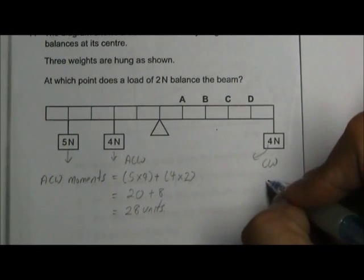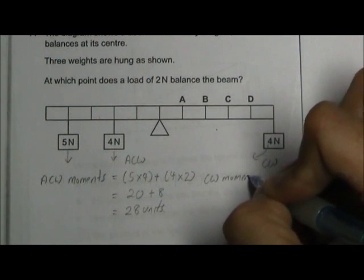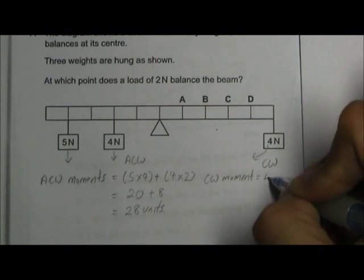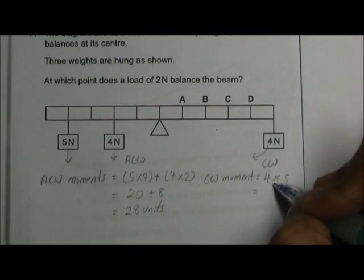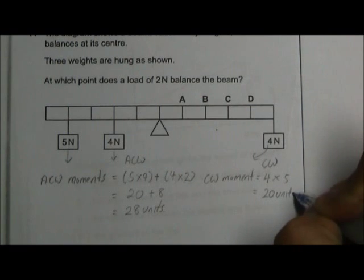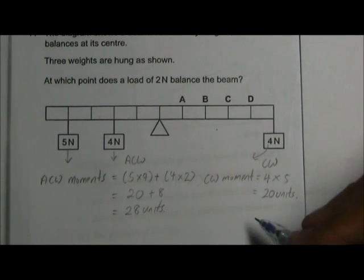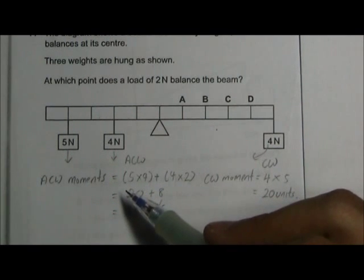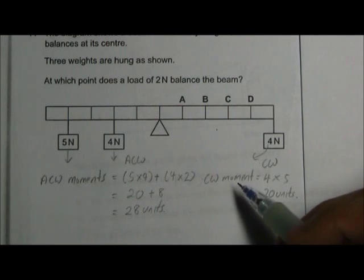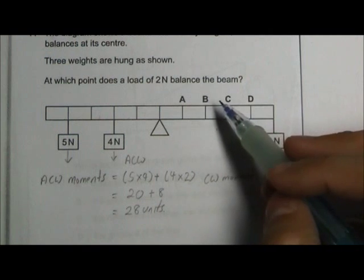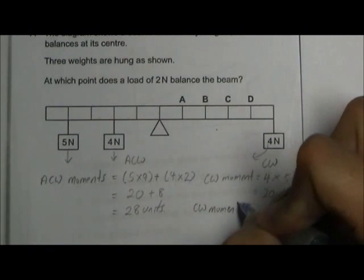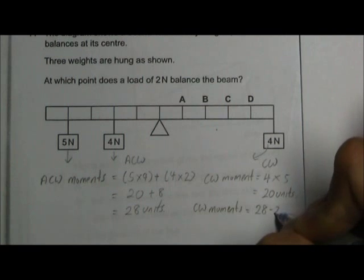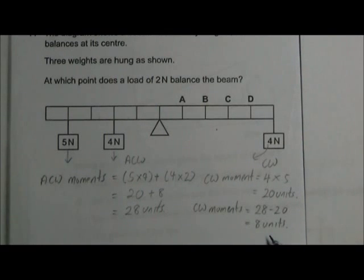Okay, then for clockwise moment is equal to 4 times distance, 4 times 1, 2, 3, 4, 5 units of length, so that will give us 20 units of clockwise moment. So we see that we have a larger anti-clockwise moment than clockwise moment. So to balance the beam, we need a clockwise moment of 28 minus 20 which is 8 units. So we need 8 units of clockwise moment to balance the beam.